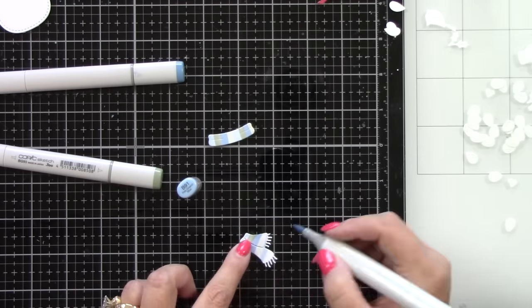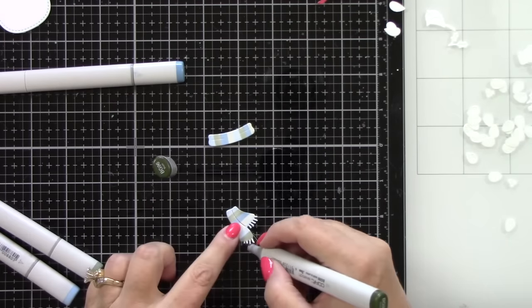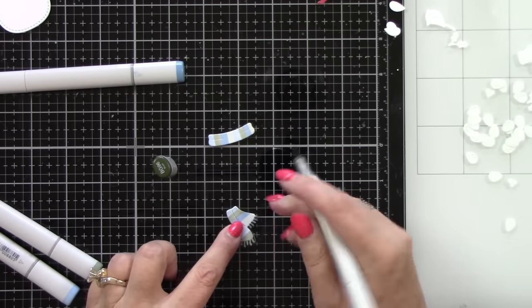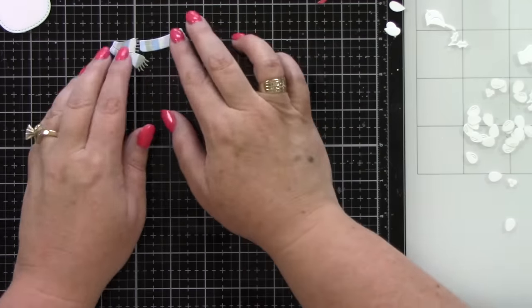So super easy to do the stripes here and then I'm going to define the stripes a little bit later with a white gel pen. I need to color those little frills at the bottom of the scarf of course.